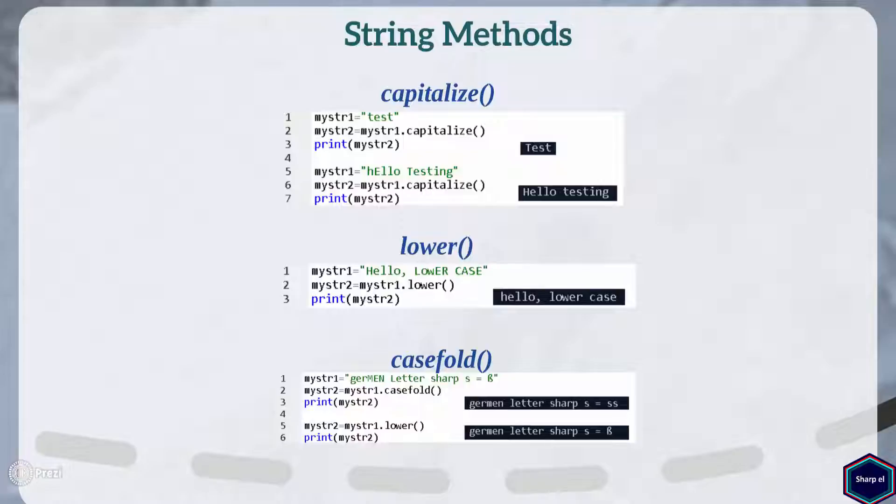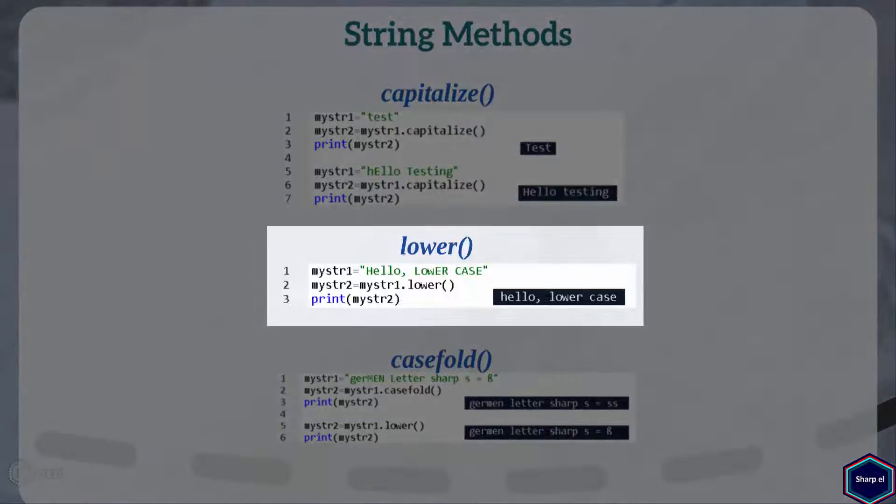Now let's move to next method, CaseFold. To understand CaseFold method, we first need to understand Lower method. The Lower method converts all letters within a string to lowercase. In this example, I have my string1 which contains uppercase as well as lowercase letters. Now when I call Lower method, Lower method returns a copy of my string in which all letters are in lowercase.